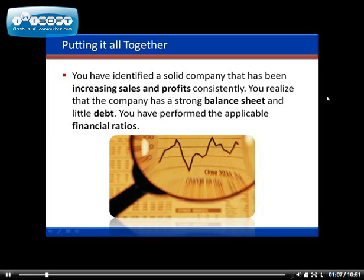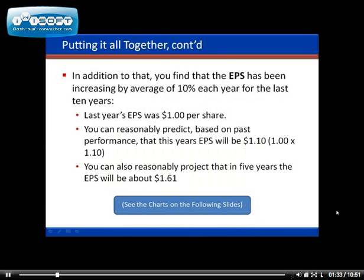You look at the balance sheet and see that they have more assets than liabilities, very little debt. You've performed the applicable ratios specific to that company's industry and see that everything is pretty much normal — nothing's out of the ordinary.